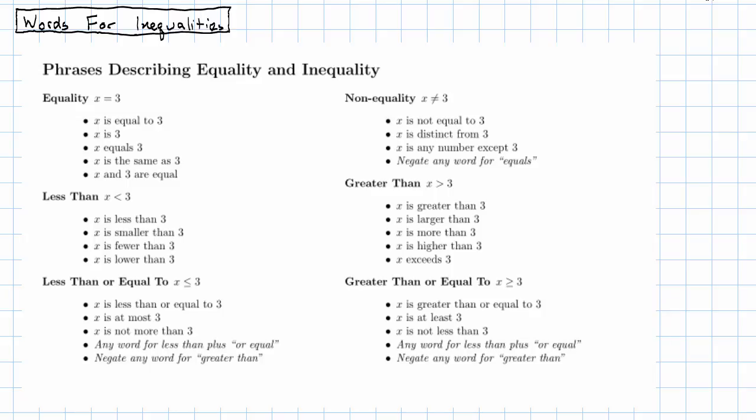I'm going to show you a table with some of these words and phrases. You can download this table from a link below the video or from Blackboard. We've already talked about equality: X is equal to 3, X is 3, X and 3 are equal.